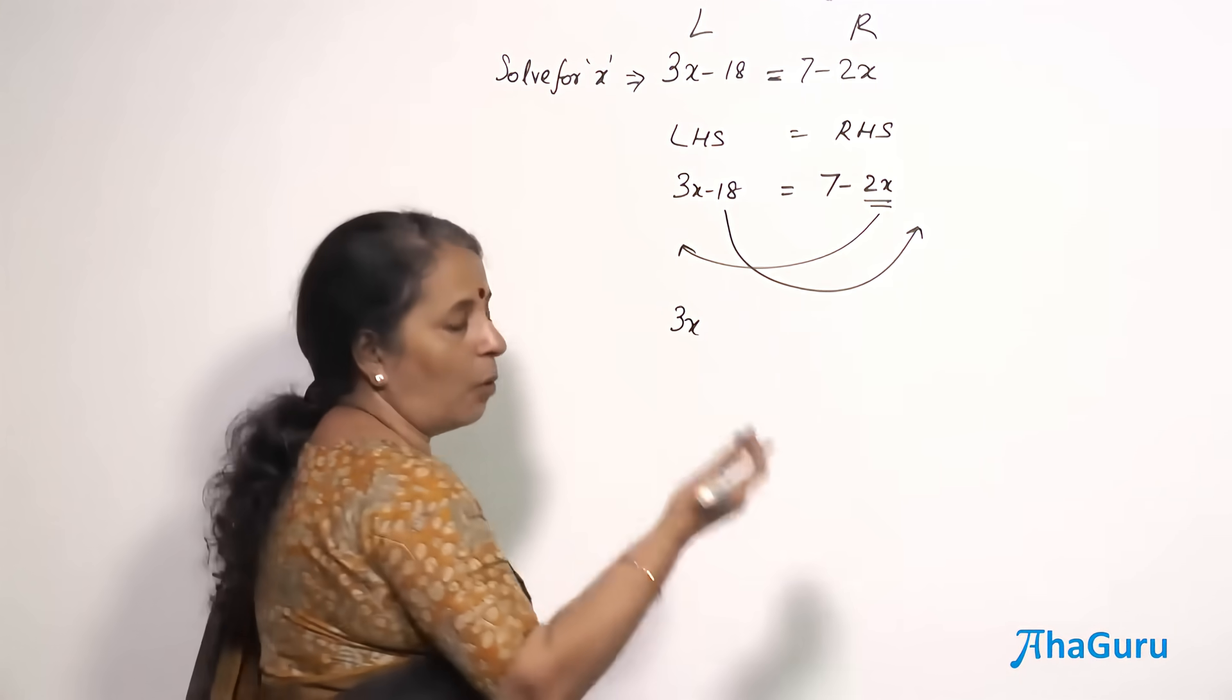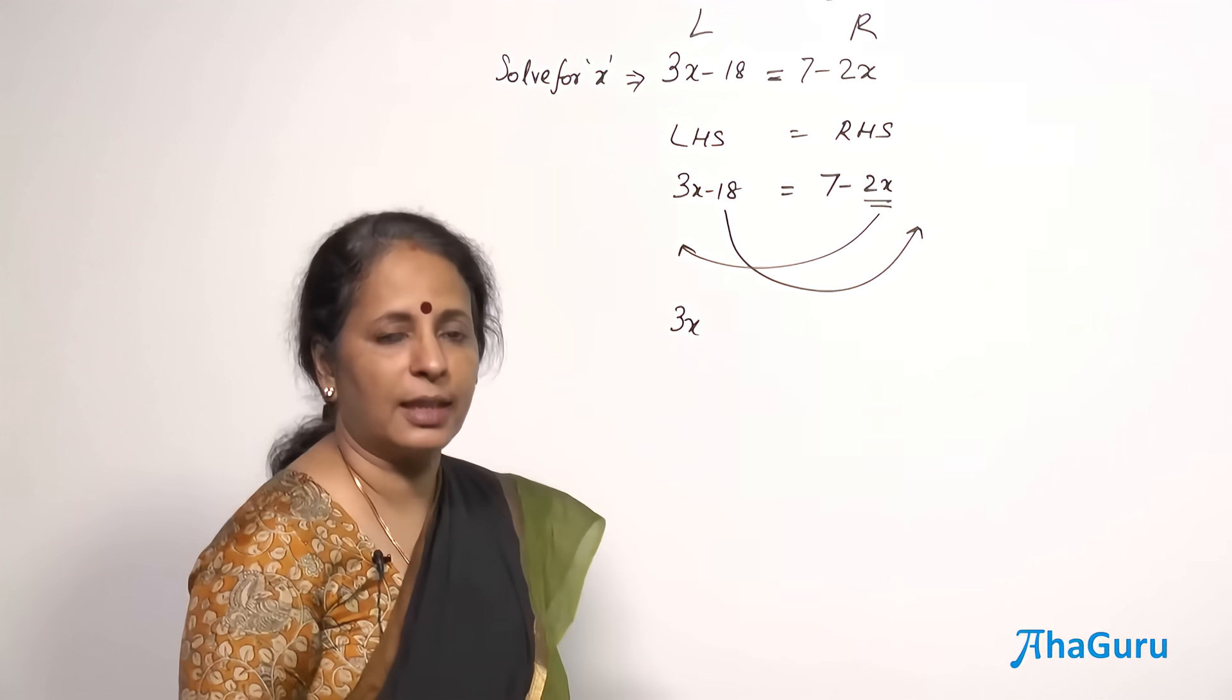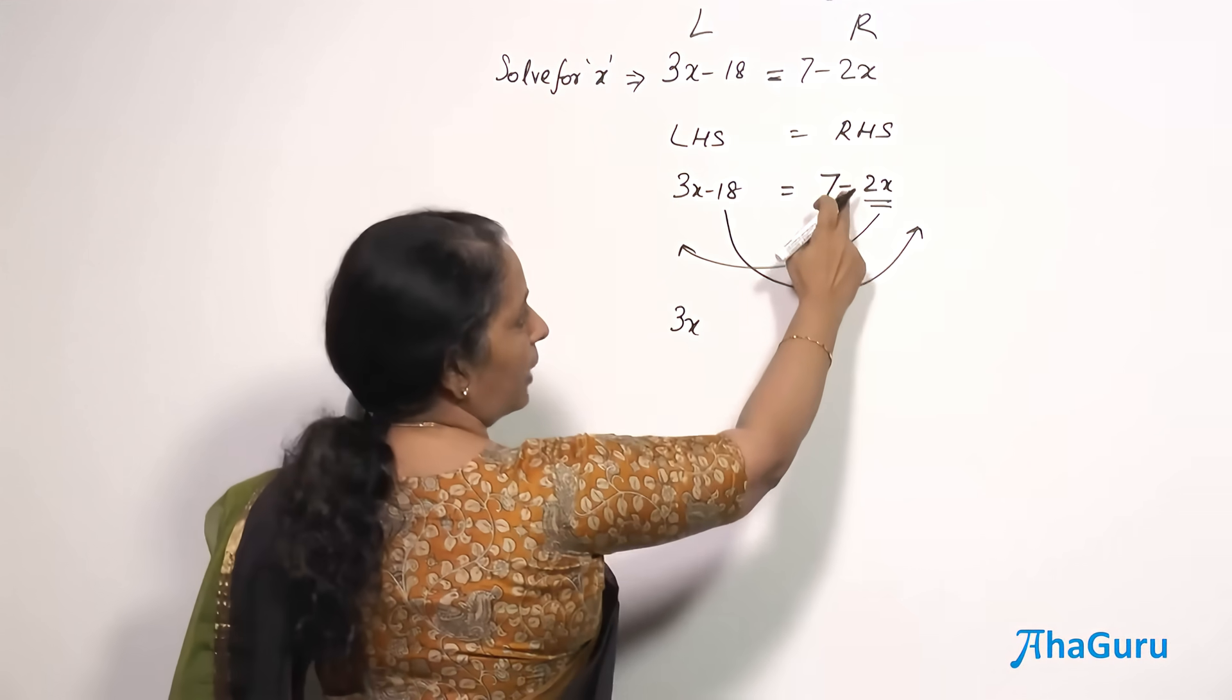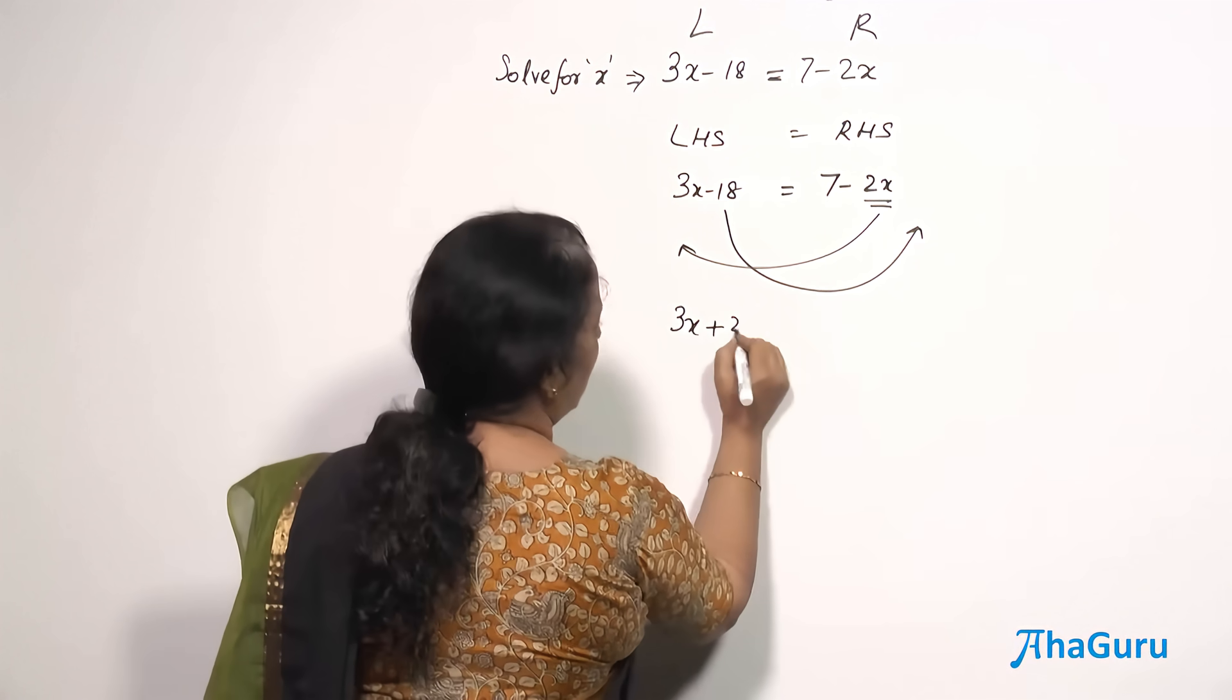Now look at the 2x. What is the sign in front of that? When it comes to the other side, the sign changes. So 2x, this is a minus sign. When it comes to this side, it becomes plus 2x.